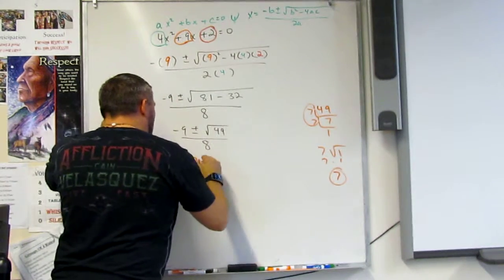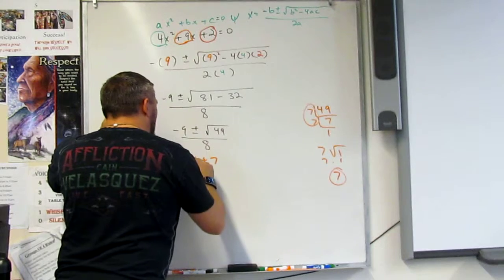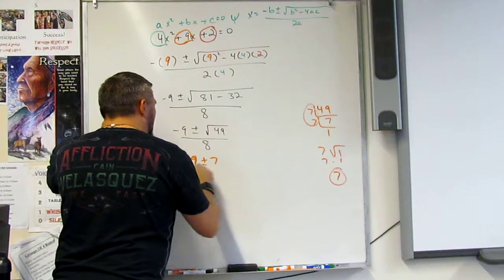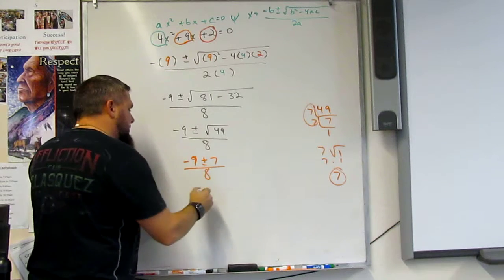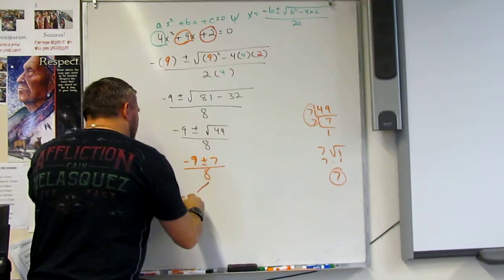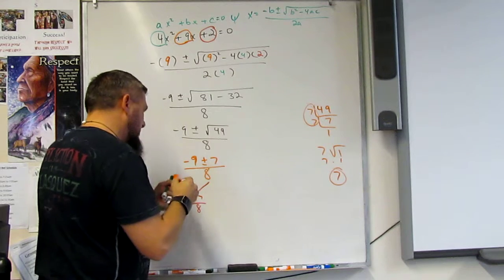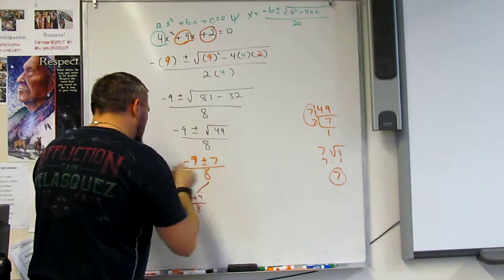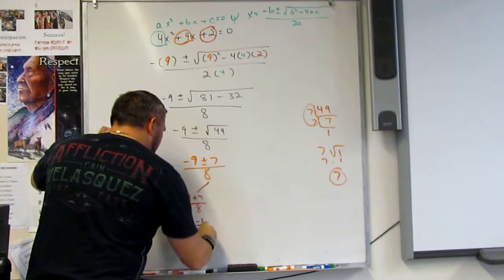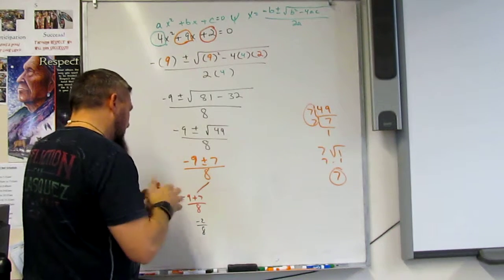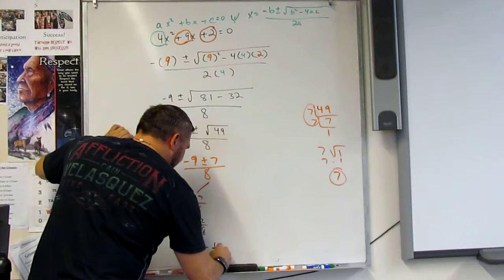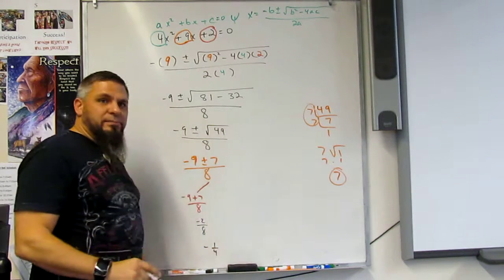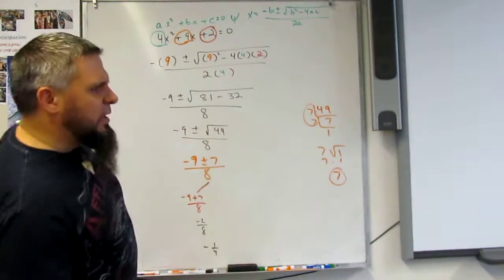All right, so this is negative 9 plus or minus 7, right? All over 8. So now this goes in two directions. One, negative 9 plus 7 over 8, which is negative 2 over 8, which is negative 1 fourth, right? I think that's what we got over there, yeah? Negative 1 fourth.